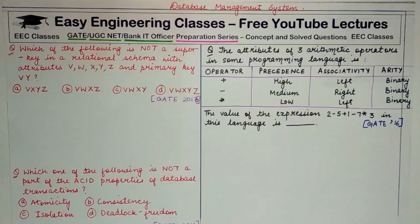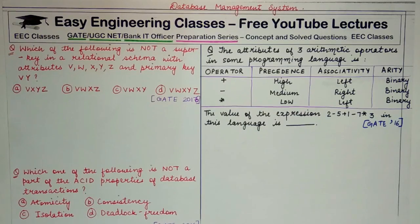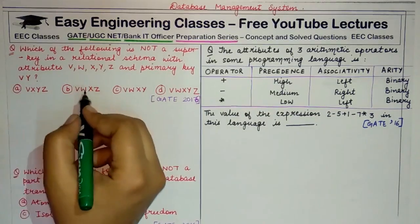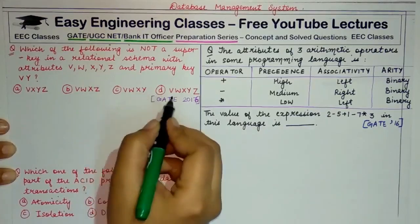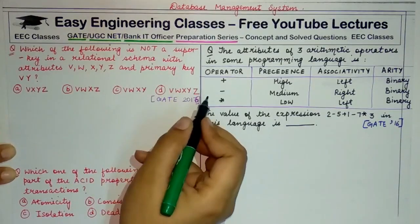The next question: which of the following is not a super key in a relational schema with attributes V, W, X, Y, Z and primary key (V, Y)? The options are: A) V, X, Y, Z; B) V, W, X, Z; C) V, W, X, Y; D) V, W, X, Y, Z.